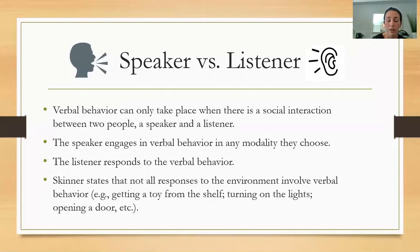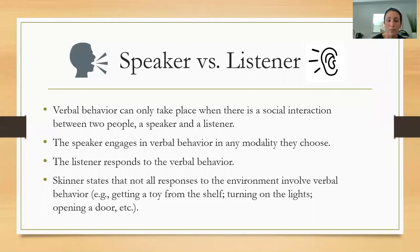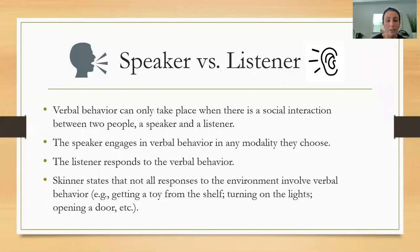According to Skinner, in order for verbal behavior to occur, you need two people: a speaker and a listener. The child is usually the speaker using language, and the listener is the adult. Verbal behavior can only take place when there is a social interaction between two people. The speaker engages in verbal behavior in any modality they choose — it doesn't only have to be vocal. Skinner also states that getting a toy from a shelf, turning on lights, or opening a door is not considered verbal behavior because that is direct reinforcement for yourself. Verbal behavior needs to happen between two people.